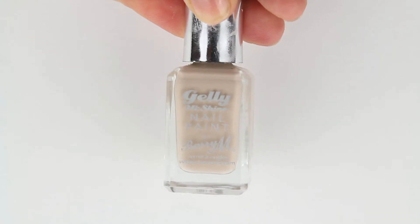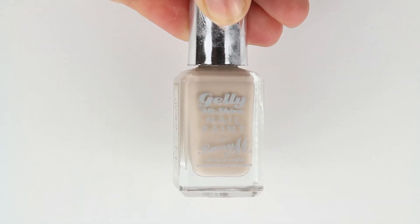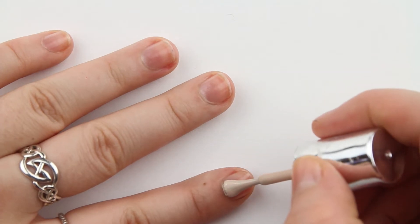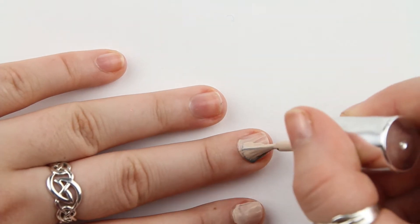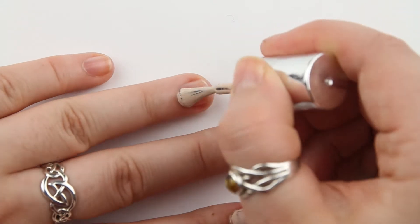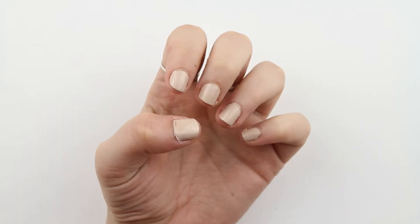The next polish I'll be using is Barry M's Gelly Polish in shade Lychee. For this design I applied two coats of polish, leaving them to dry in between. This is how the polish looks after two coats.